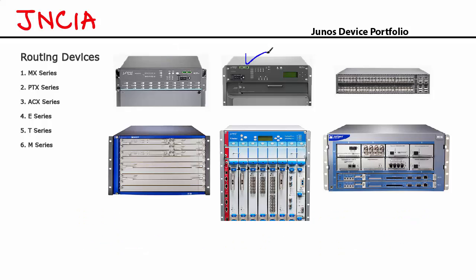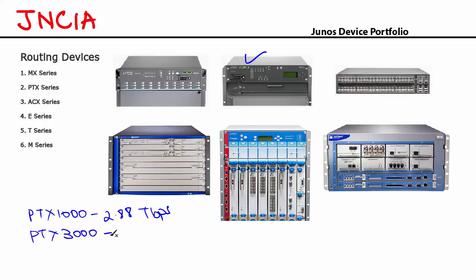The PTX series, also known as packet transport routers, are core routers designed for high volumes of traffic. There are three models: the PTX1000 at 2.88 Tbps, the PTX3000 at 8 Tbps, and the PTX5000 at 24 Tbps. These are really powerful routers capable of handling very high volumes of traffic, and those are the only three models in the PTX series.